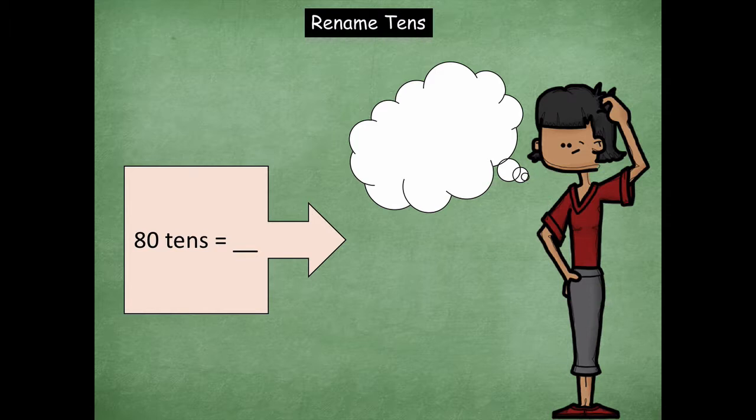All right, 80 tens. We're making it a little bit more challenging now. Remember that trick where you just want to bring that zero in to the very end. So 80 turns into 800. So the value of 80 tens is 800. Great job.